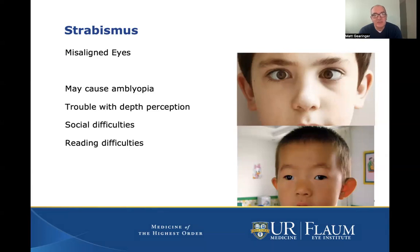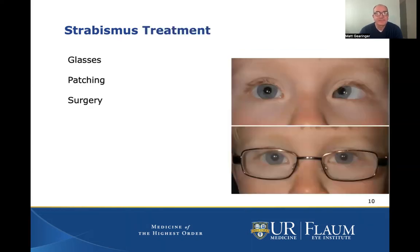Some causes of strabismus and misaligned eyes can lead to reading difficulties. Treatment of strabismus can include glasses for kids who are very farsighted — it can relax the focus to get the eyes straighter, like the picture on the right. Patching can be done in some types of strabismus, especially those associated with poor vision or amblyopia.